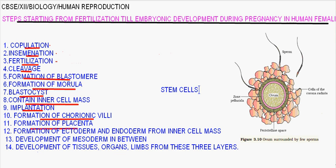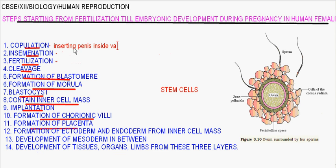Copulation is the process of inserting the penis — the external sex organ in the male — inside the vagina, which is the external genitalia of the female, during intercourse.